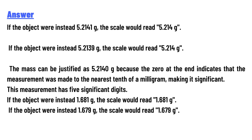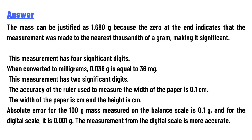If the object were instead 1.681 g, the scale would read 1.681 g. If the object were instead 1.671 g, the scale would read 1.671 g. The mass can be justified as 1.680 g because the zero at the end indicates the measurement was made to the nearest thousandth of a gram, making it significant. This measurement has four significant digits.